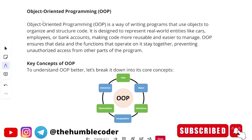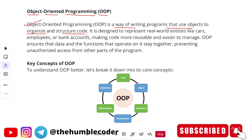Let's start with what OOP actually is. The full form of OOP is Object Oriented Programming. OOP is a way of writing programs that use objects to organize and structure code. It is designed to represent real-life entities like cars, employees, or bank accounts, making code more reusable and easier to manage. OOP ensures that the data and the functions that operate on it stay together, preventing unauthorized access from other parts of the program.